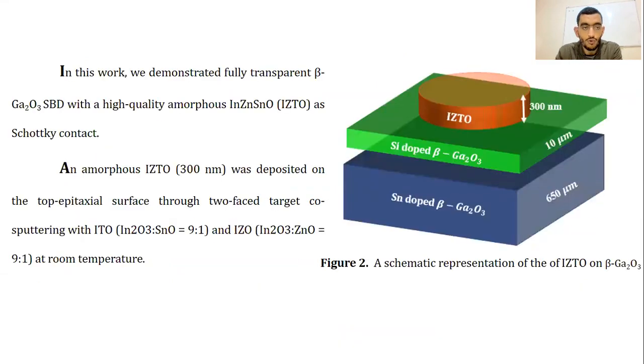In this work, we demonstrated fully transparent gallium oxide Schottky barrier diode with high-quality amorphous indium zinc tin oxide as Schottky-contact. Amorphous indium zinc tin oxide was deposited on the top epitaxial surface through two-face target co-sputtering with indium tin oxide and indium zinc oxide at room temperature.